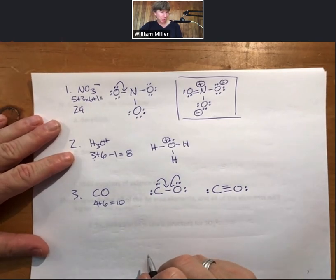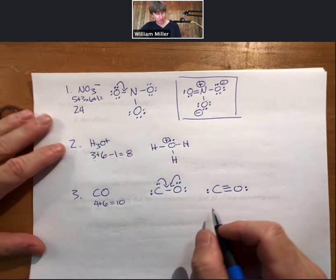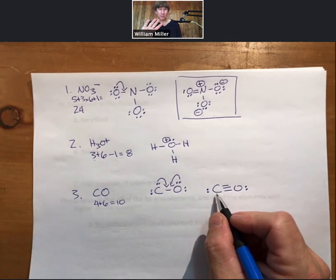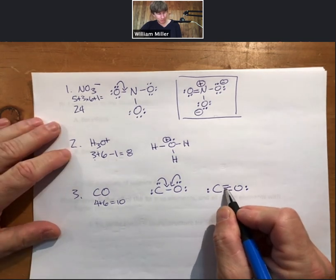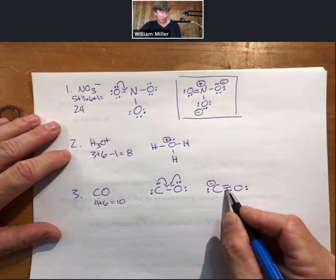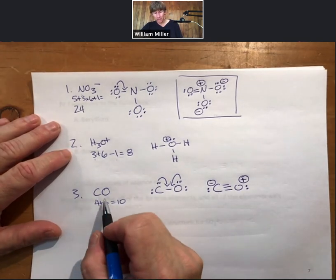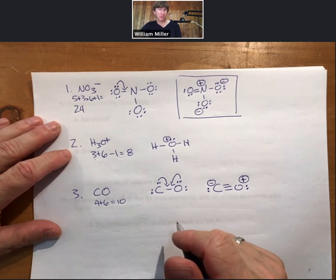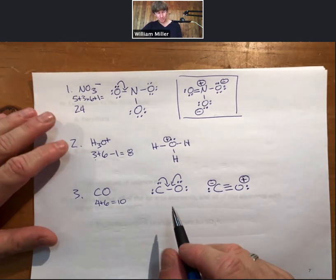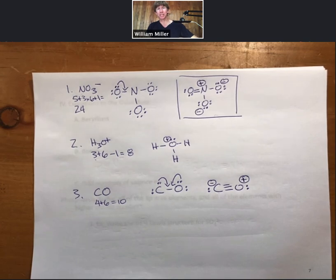The formal charge analysis looks strange: carbon does not have four bonds so its formal charge will not be zero. Carbon has four valence electrons, three bonds, and two unshared electrons — four minus five equals minus one. Oxygen has six valence electrons, three bonds, and two unshared electrons — six minus five equals plus one. The overall charge is zero, yet there is formal charge within the molecule. These are strange cases, but the process always works: follow the steps, draw the structure, do the formal charge analysis, and see what it tells you.